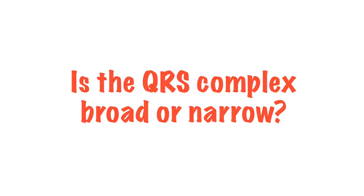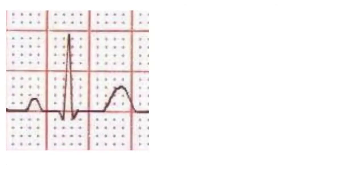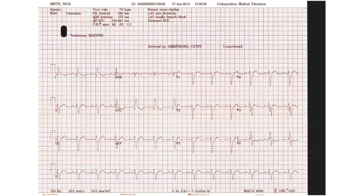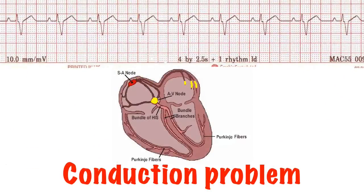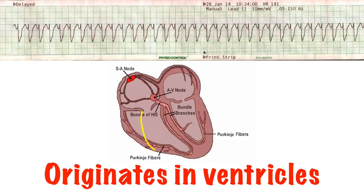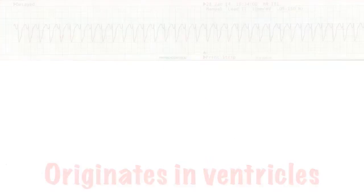The QRS complex should be less than 0.2 of a second, or three small squares. Anything over this can be defined as broad. This will be due to a conduction problem, with the electrical impulse finding its normal fast-moving bundle route blocked and having to go down a back route, or because the impulse originates in the ventricles, such as in ventricular tachycardia.